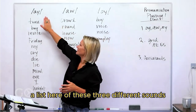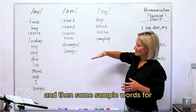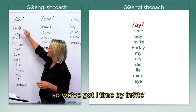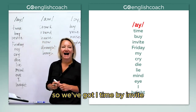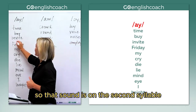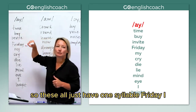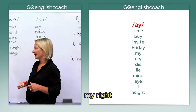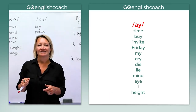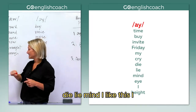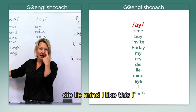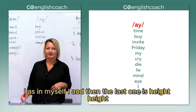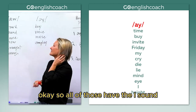I've got a list here of these three different sounds and some sample words that have each sound in them. So we've got the 'i' sound: time, buy, invite. That sound is on the second syllable in 'invite,' while the others have just one syllable. Friday, my, fry, die, lie, mind, the letter 'I' as in myself, and then height. So all of those have the 'i' sound.